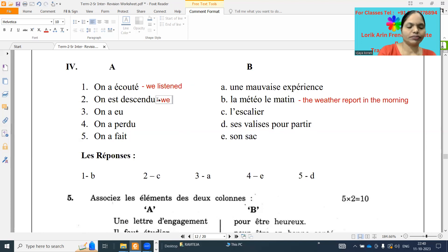On a descendu. We got down. On a eu. We had. On a perdu. We lost. On a fait. We packed or we made. So if the suitcases are coming like that, means we packed also. Une mauvaise expérience. A bad experience. And l'escalier, a staircase, stair. And ces valises pour partir. Suitcases for to leave, packing the suitcases for to leave. And son sac. Means what? Bag.